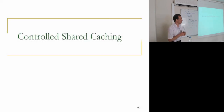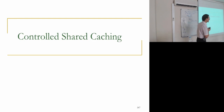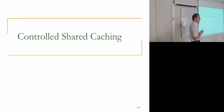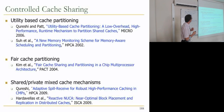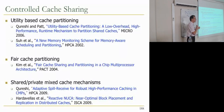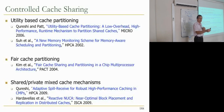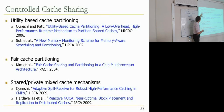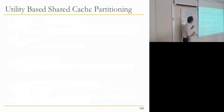We still have time, so we can cover some of the controlled cache sharing mechanisms as well. We've covered efficient cache utilization so far and a little bit of efficient memory utilization. But there is another problem with caching, which is how to control the sharing of the cache. Efficient cache utilization helps a little bit, but you're not explicitly partitioning the cache across different applications. There have been many mechanisms proposed to explicitly partition the cache.